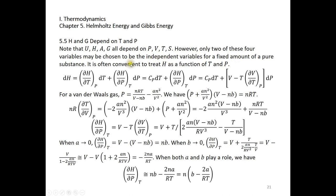It's often convenient to treat H and G as functions of T and P. Let's look at H first. DH can be expressed as (δH/δT)dT + (δH/δP)dP. The reason we do this is because δH/δT under constant pressure is CP. δH under constant pressure is simply Q_P, and δH/δP under constant temperature can be written as V minus T(δV/δT). We can prove this using one of the Maxwell relations.